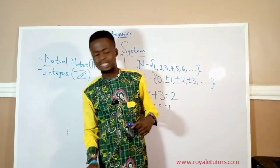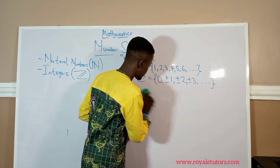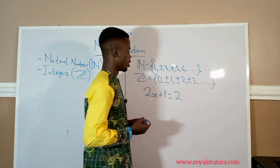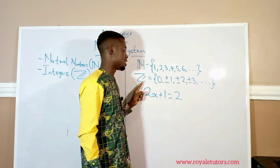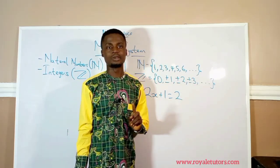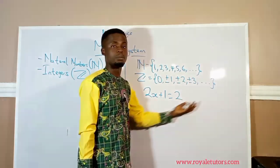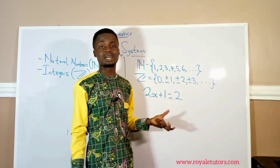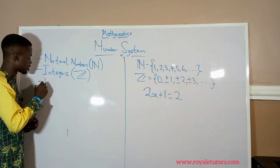They thought that integers would allow them to solve all equations, until they came in contact with another problem like 2x plus 1 is equal to 2. If you solve this equation, you won't get an answer in natural numbers, neither will you get the answer in integers, because the result is going to be a fraction. So after several decades of writing 'impossible,' new mathematicians came together and formed a new number system to accommodate fractions — what we call rational numbers.